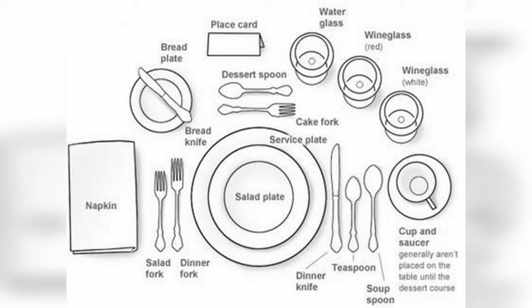You are going to pick up the cutlery on the outside and use it first. As you can see, the soup spoon is on the outside, meaning you can judge that soup is going to be served. That is why the soup spoon has been placed towards the outside. The cutlery is placed from outside to inside.